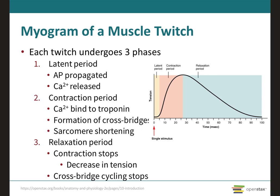A twitch consists of three sequential phases: the latent period, the contraction period, and the relaxation period. The latent period, which usually lasts about two milliseconds, is a very brief delay that occurs between the application of the initial stimulus — time zero on the graph — and the beginning of the contraction. During this time, excitation-contraction coupling occurs: the muscle action potential sweeps along the sarcolemma and into the T-tubules, causing release of calcium ions from the sarcoplasmic reticulum.